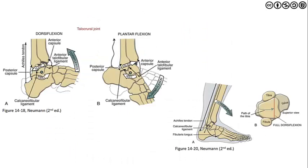Newman provides a helpful graphic for understanding the arthrokinematics of the talocrural joint. In open-chain dorsiflexion, there is a posterior glide or slide and an anterior roll — the anterior capsule is placed on slack, specifically through the anterior talofibular ligament, while the posterior capsule is stretched. In plantar flexion, the posterior capsule goes on slack, resulting in a posterior roll and an anterior glide. Understanding these component motions informs both assessment and mobilization intervention strategies.